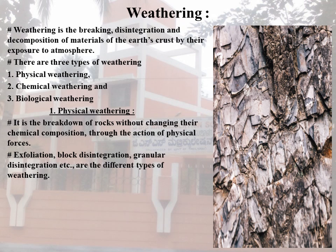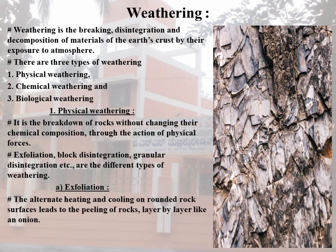Exfoliation, block disintegration, and granular disintegration are the different types of Physical Weathering. Exfoliation: the alternate heating and cooling of rounded rock surfaces leads to the peeling of rocks layer by layer like an onion. This is called Exfoliation.